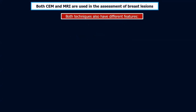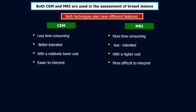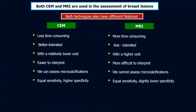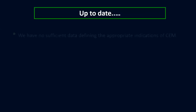Both techniques also have different features. Contrast mammography is less time consuming, better tolerated, with a relatively lower cost. It is easier to interpret, and we can assess microcalcifications with equal sensitivity and slightly higher specificity than MRI. But in spite of all these advantages, we have to admit that MRI is still the gold standard in breast imaging, having the ability to do multi-sequential and multi-planar imaging allowing better lesion characterization.